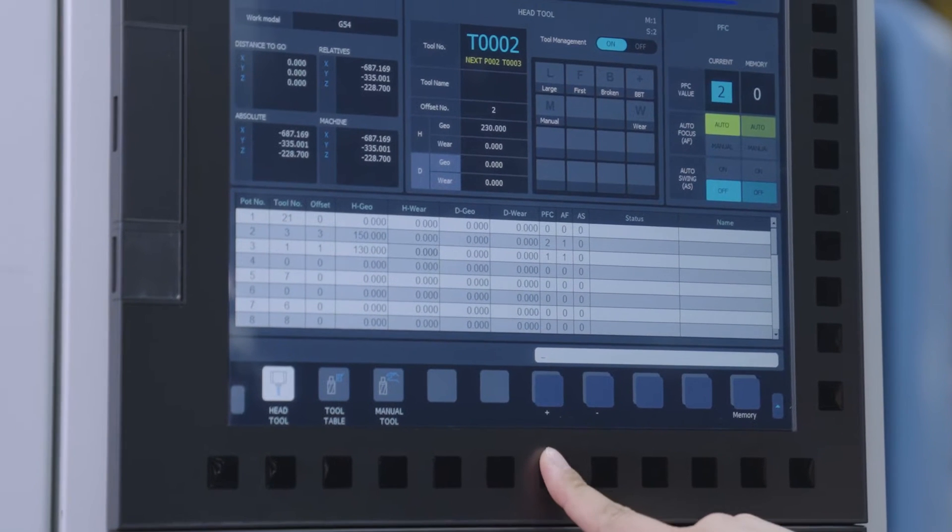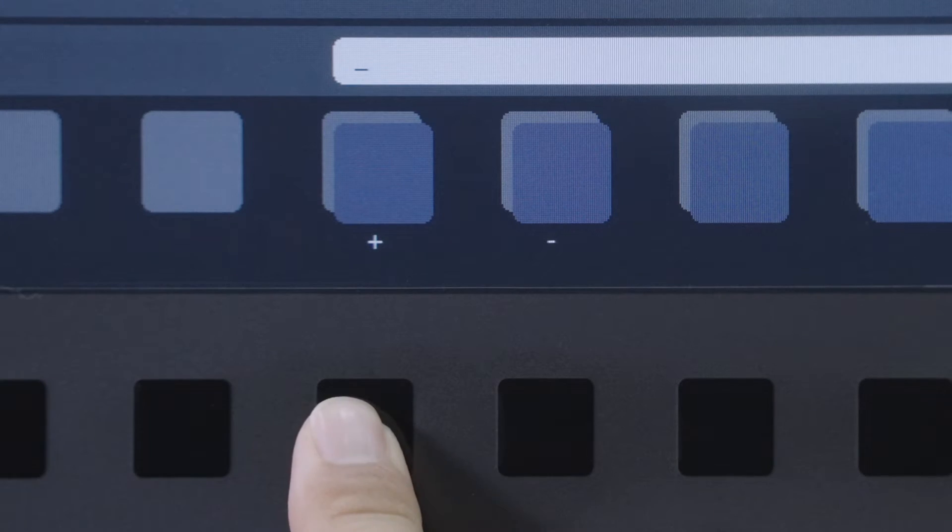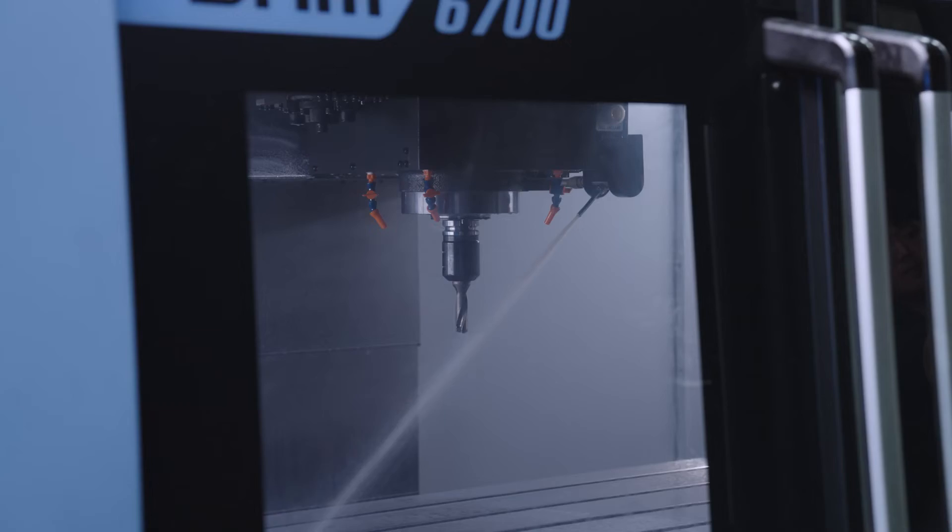Two, you can change the coolant angle manually by pressing the plus and minus buttons on the control panel, even while machining.